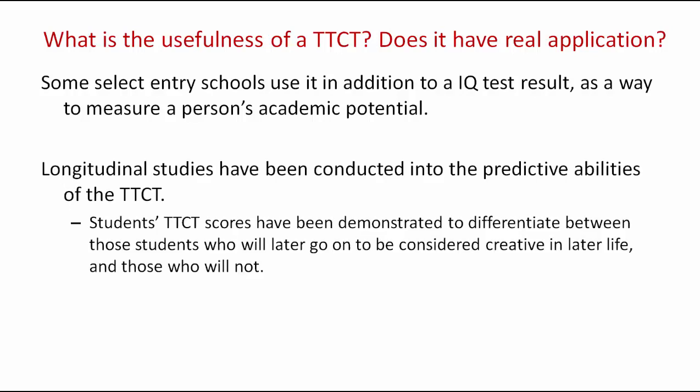Longitudinal studies have also been conducted into the predictive abilities of the Torrance Test of Creative Thinking. Students' scores on the test have been demonstrated to differentiate between those students who will go on later in life to be considered creative and those who will not. Therefore, if a student completes a Torrance Test of Creative Thinking late in their elementary school career or early in their high school career, this can be used as a reasonable predictor of whether they are likely to be creative later in their professional career.